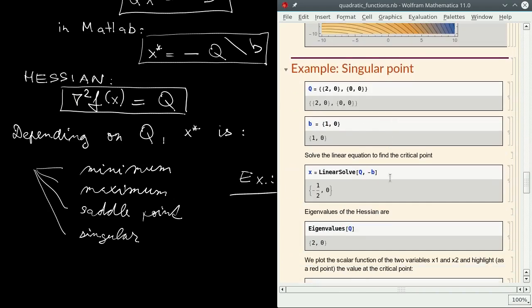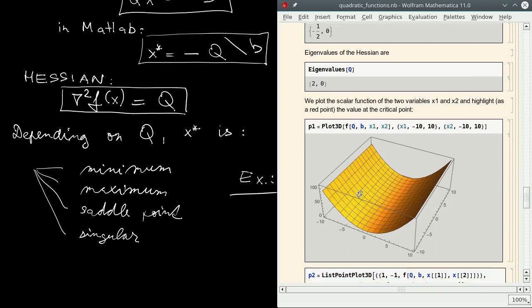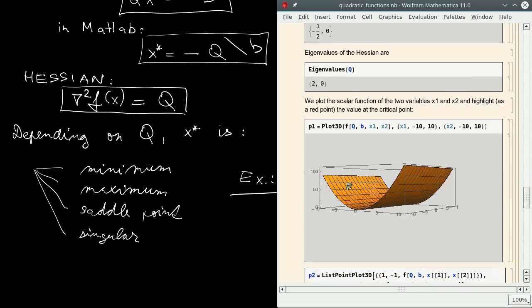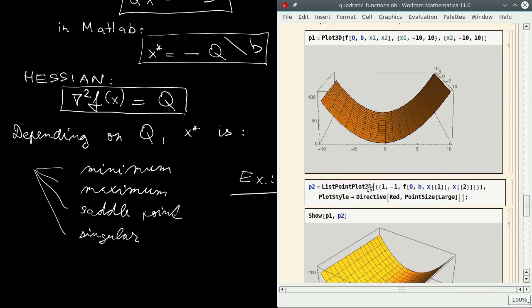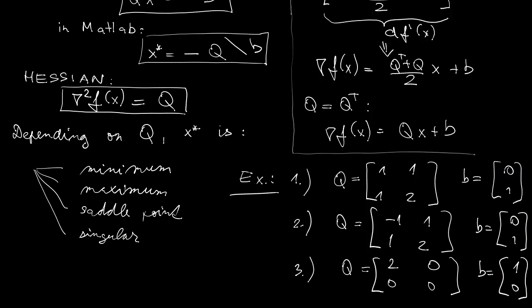Finally, for the third example, one eigenvalue of the Hessian is positive, the other is zero. This means that along one direction, the function is minimized at the critical point. From the other direction, it's constant.